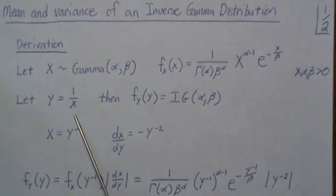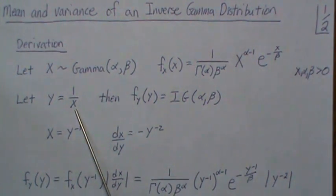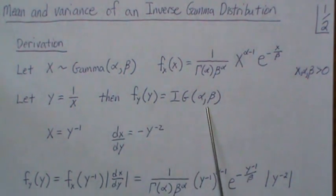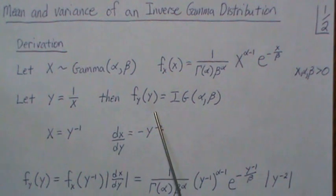But if we let y equal 1 over x, then y is distributed as an inverse gamma with parameters alpha and beta, and so let's derive that.